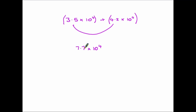In my example the answer is already in standard form so I can leave it as it is. If you happen to have an answer that is over ten you may need to convert it back into standard form, as we saw in the multiplication examples. Subtraction of course is just the same — make sure the powers are the same and then subtract the two front numbers.